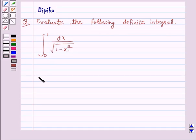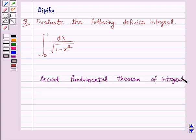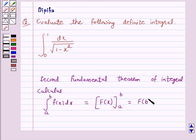Now we know that by the second fundamental theorem of integral calculus, we have integral from a to b of f(x)dx, where f is a continuous function defined on the closed interval [a,b], is equal to F(x) from a to b, where F is an anti-derivative of f. And this is again equal to F(b) minus F(a).